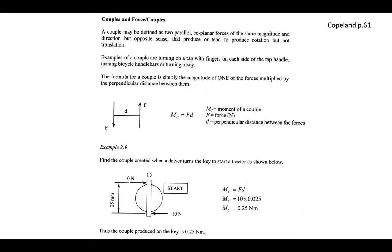From a mathematical perspective, the moment of a couple - often written as M subscript C - is equal to the force of the couple multiplied by its perpendicular distance. Here's an example: a driver trying to start a tractor by turning a key, with a 10 Newton force and the two forces 25 millimetres apart. To calculate the moment we just pick one of the two forces - it doesn't matter which - so it's 10 multiplied by the distance, and it's important to remember the units to get the right answer.